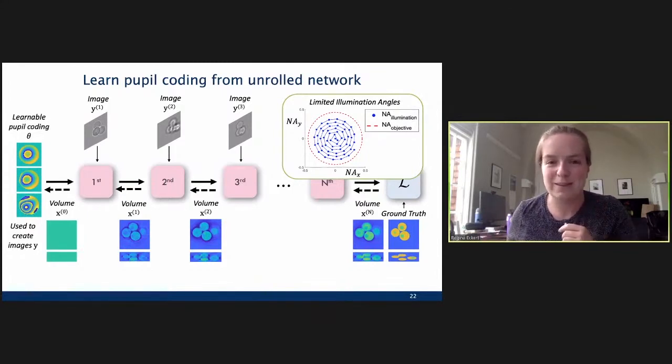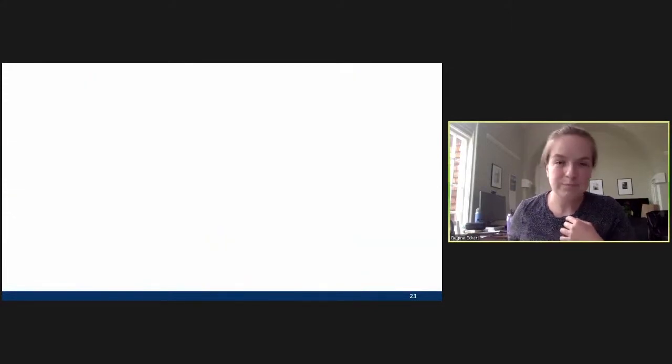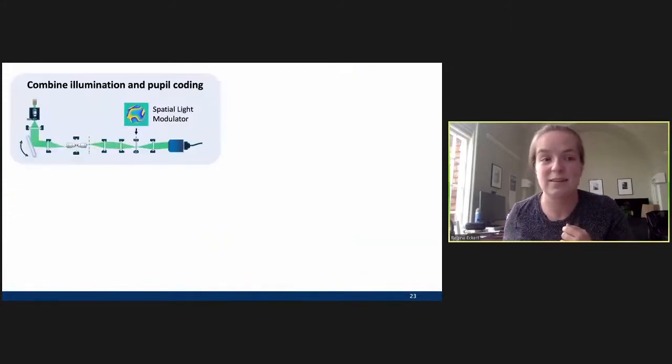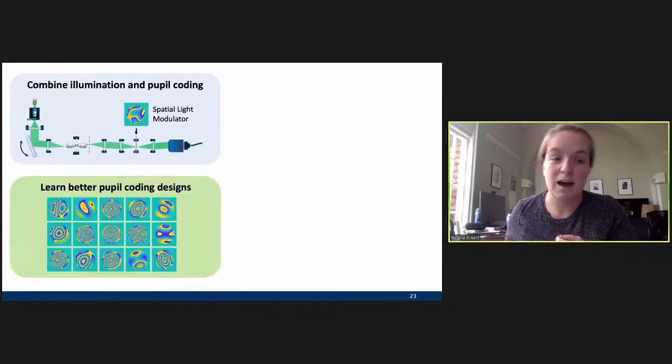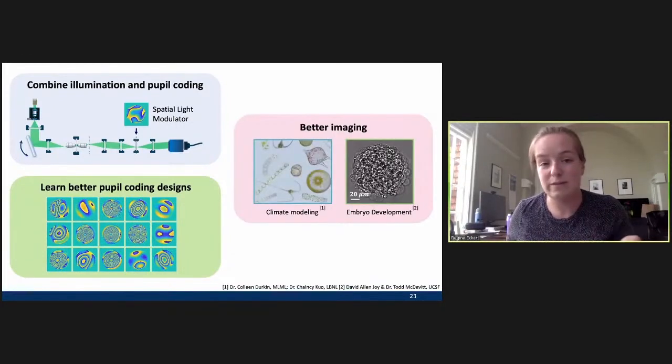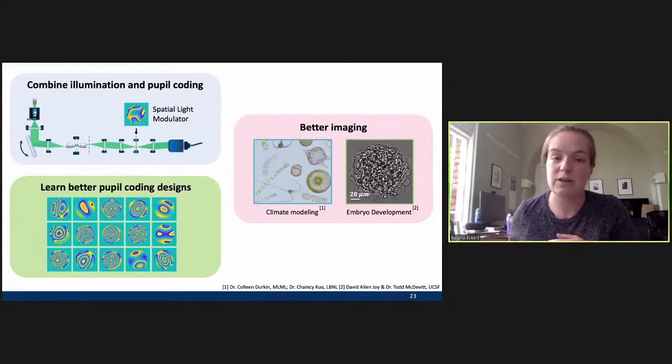Then we use this to reconstruct a volume, which is then compared to a ground truth volume, and that loss is backpropagated through the network to update our learnable pupil coding, and then update our images. And then we've constrained our system here to only have this limited illumination angle case to do this reconstruction. So, that's kind of how we've thought about this. I won't go into the details too much because I don't think I have time, but if you're curious and want to ask later, email me. Let me know. All right. So, with that, I've introduced this new combination of illumination and pupil coding for 3D refractive index tomography. I've talked about how we might learn better pupil coding designs using machine learning. And all of this has been in service of doing better imaging for a wide range of different applications.